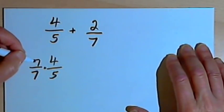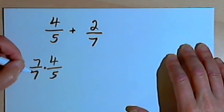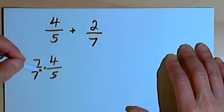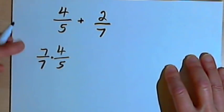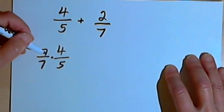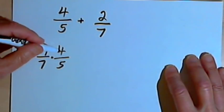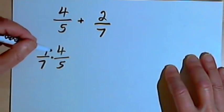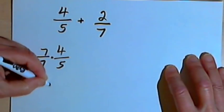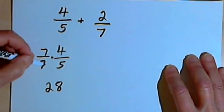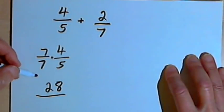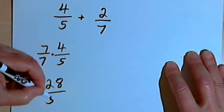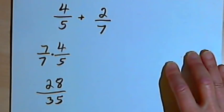Now if you think about it, 7 over 7 is just equal to 1, so really I'm just multiplying this fraction by 1. When we multiply two fractions, we multiply the numerators to get the new numerator, so 7 times 4 is 28. And then we multiply the denominators to get the new denominator, and 7 times 5 is 35.